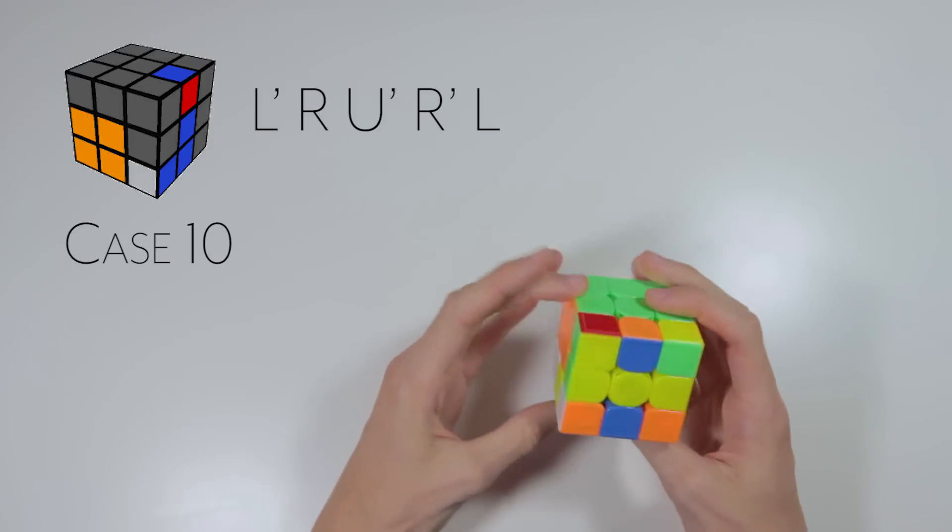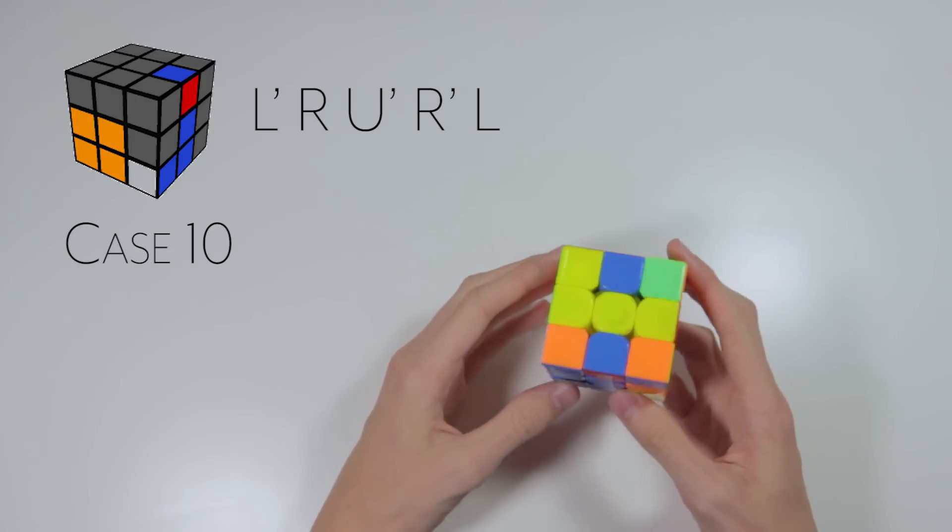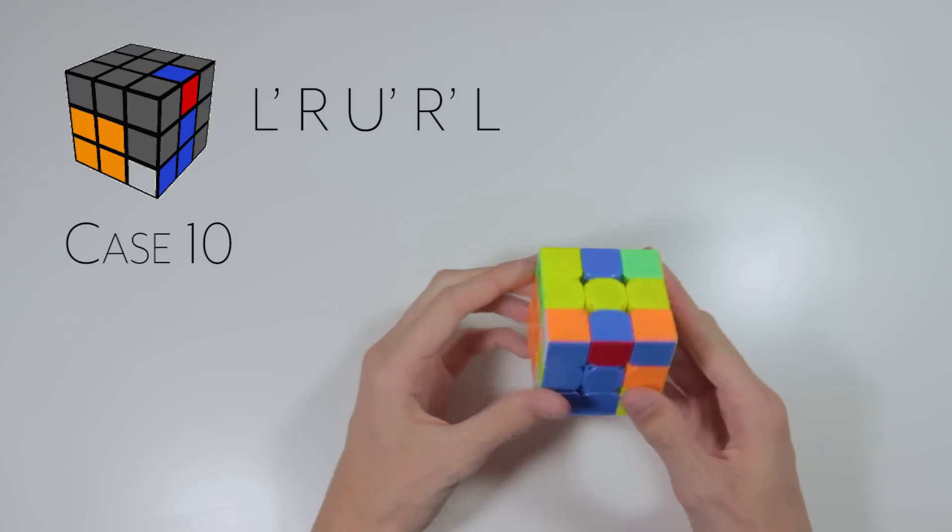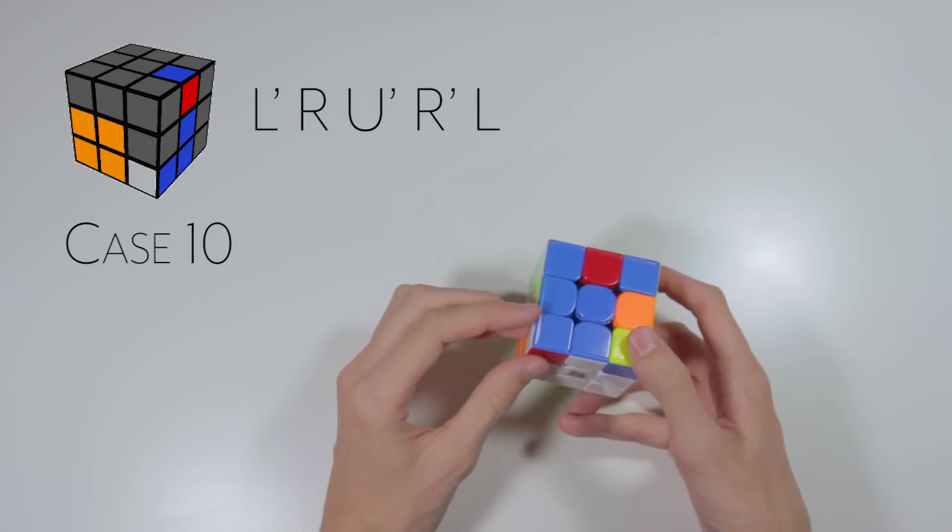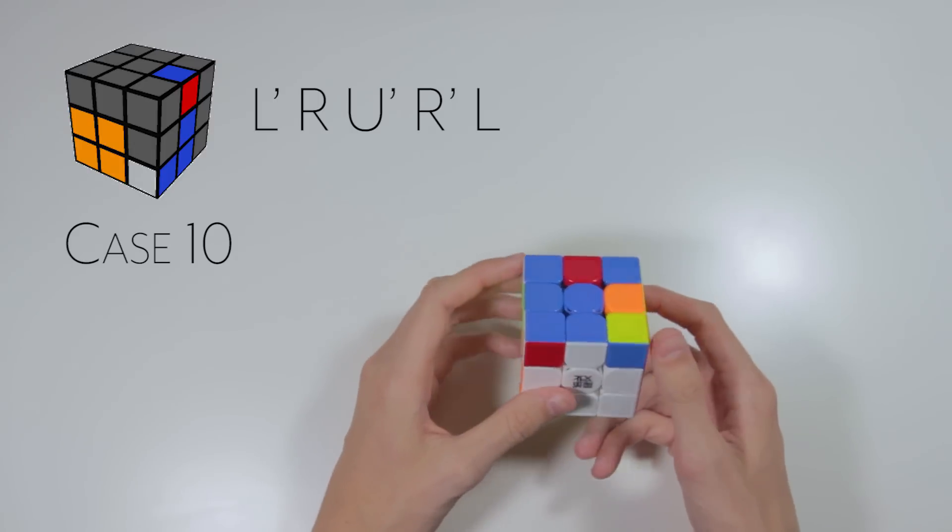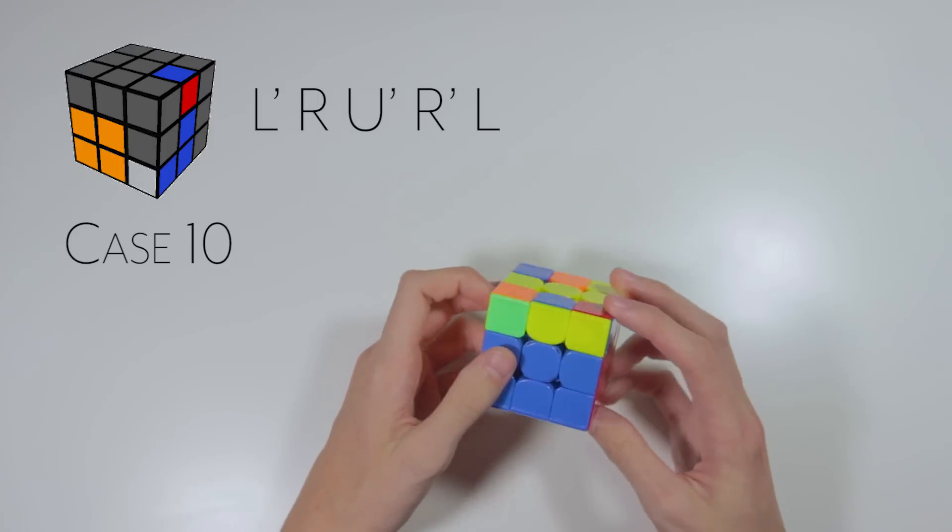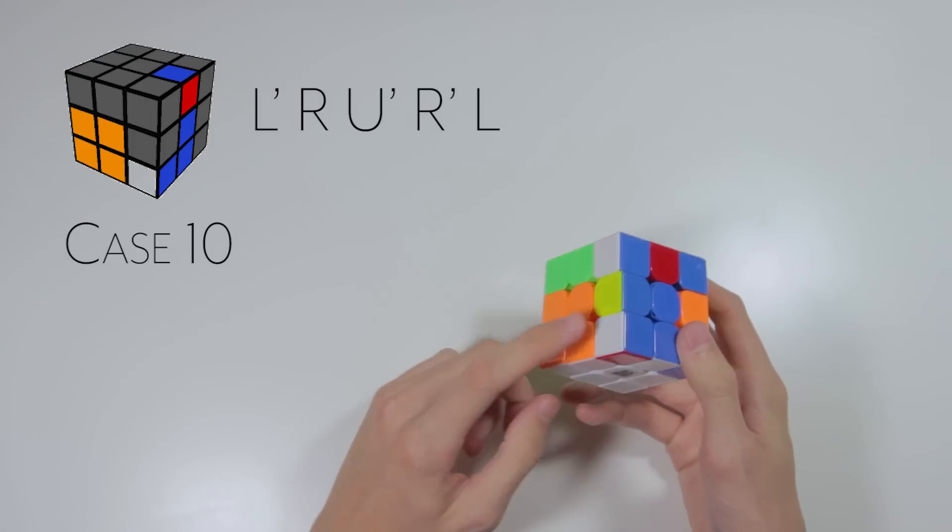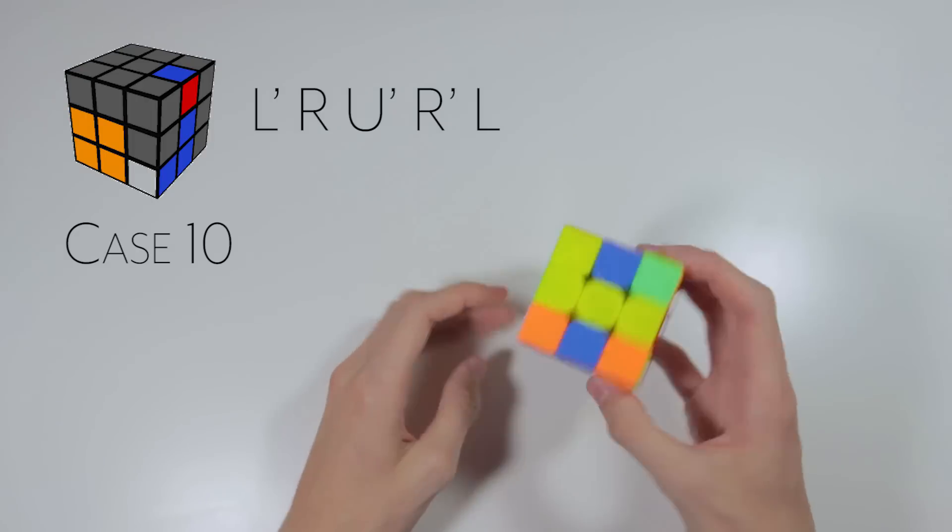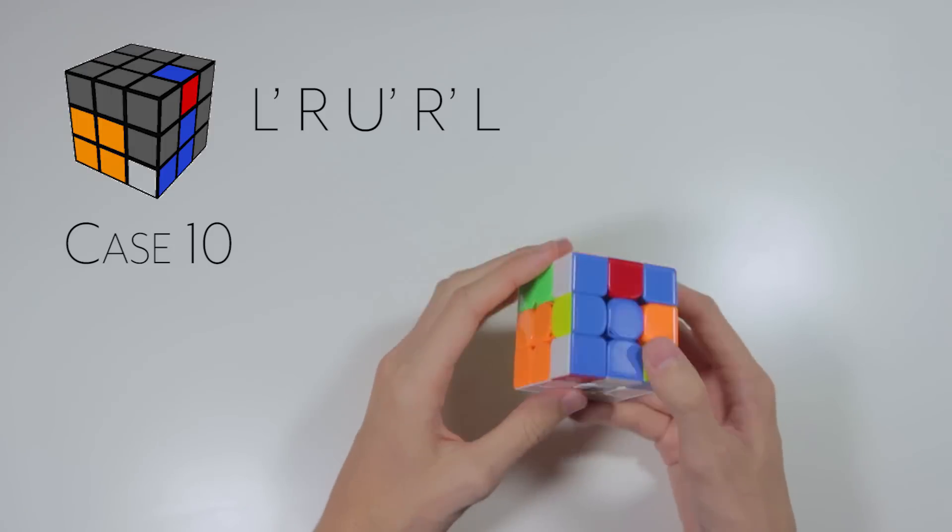Now this one isn't that hard to figure out, but I figured I'd include it in here because I do use it a lot, especially when multi-slotting. Here the blue and red pair is broken up, and so we can take it out like this, and then insert it, but we can actually save a few moves just by not bringing this back down. So here's what the actual algorithm looks like.